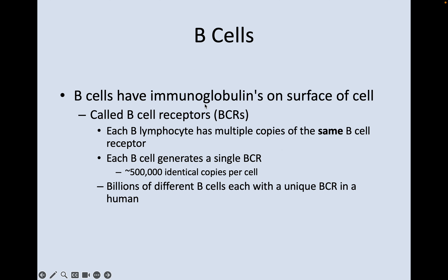B cells have immunoglobulins on the surface of the cell called B cell receptors, or BCRs. Each B lymphocyte has multiple copies of the same B cell receptor — each B cell generates a single BCR, and there can be about 500,000 identical copies of the BCR within each cell, with billions of different B cells, each with a unique BCR, in a human.